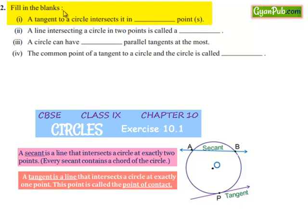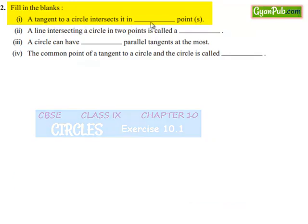Moving on to the second question, fill in the blanks. Four bits are given. First bit: a tangent to a circle intersects in dash points.